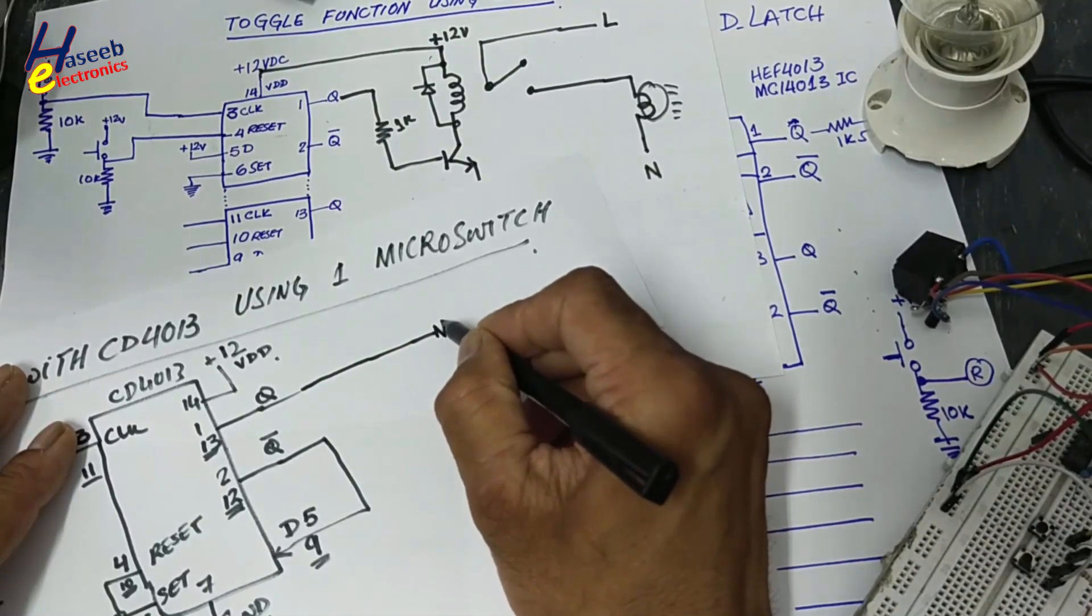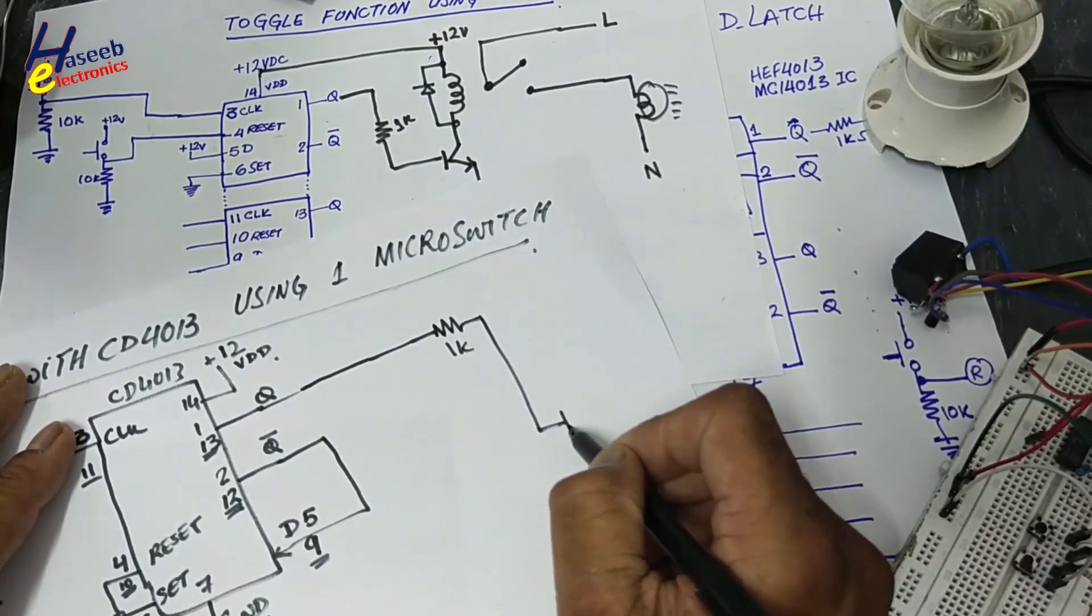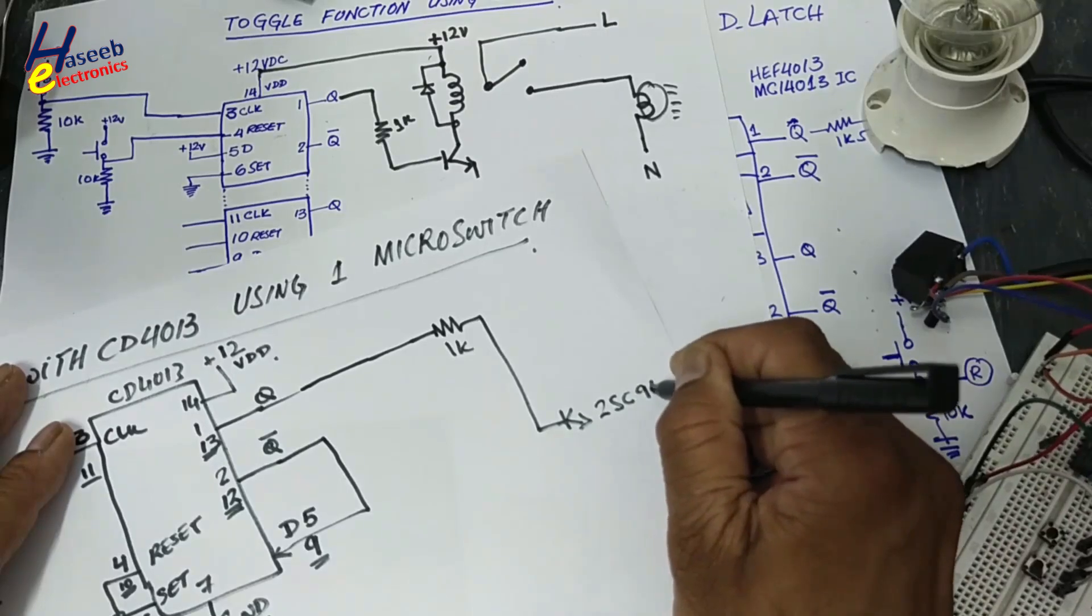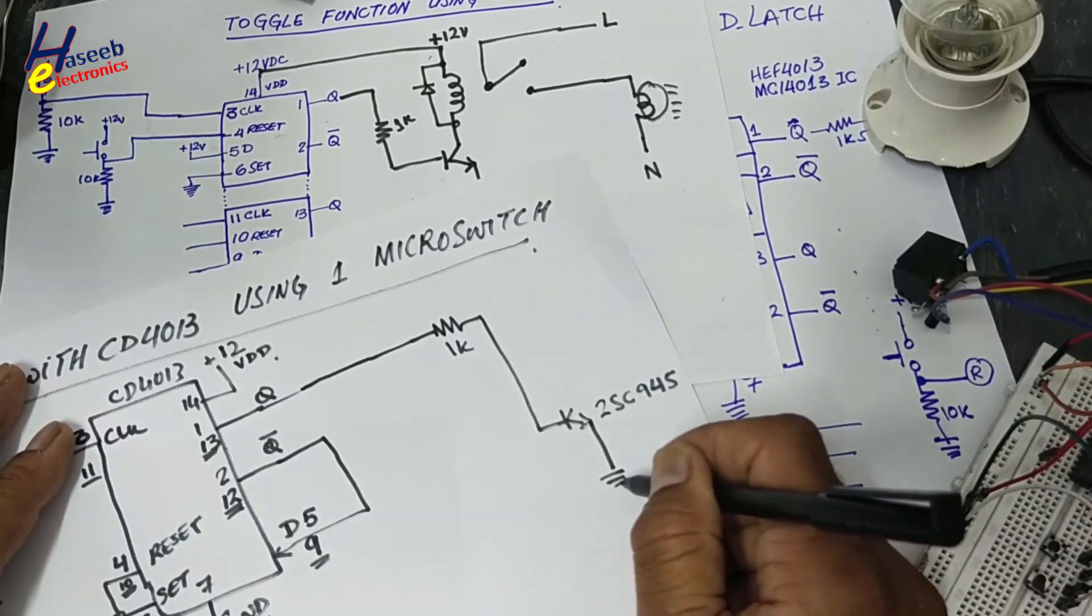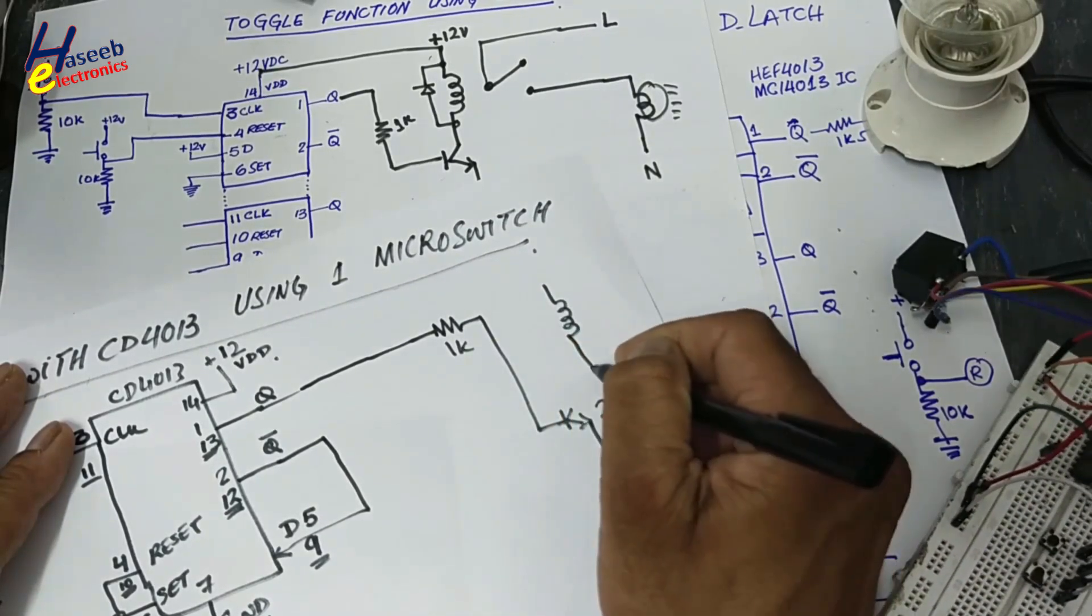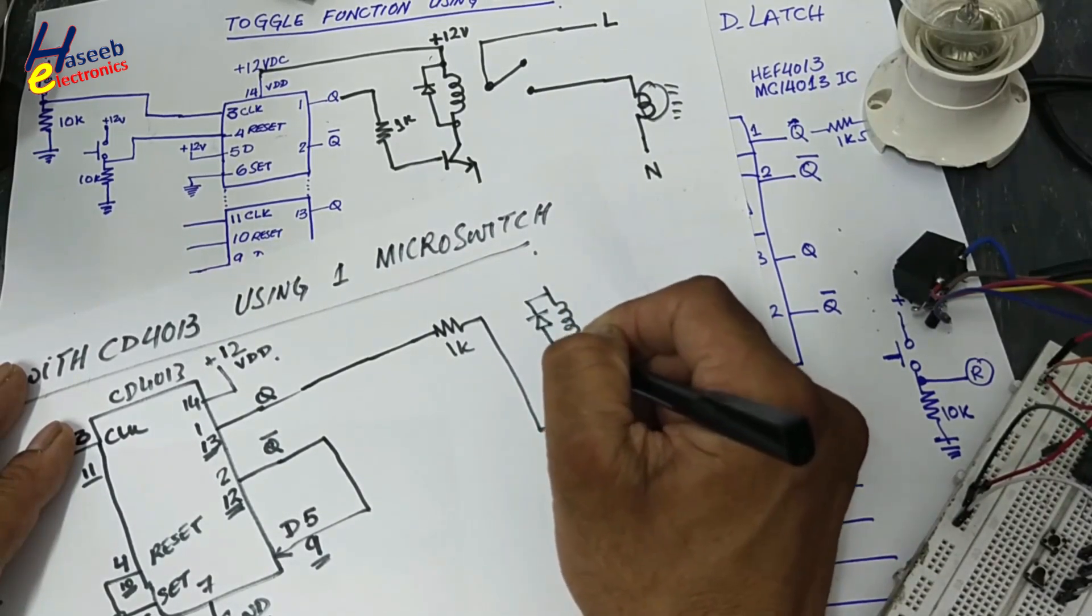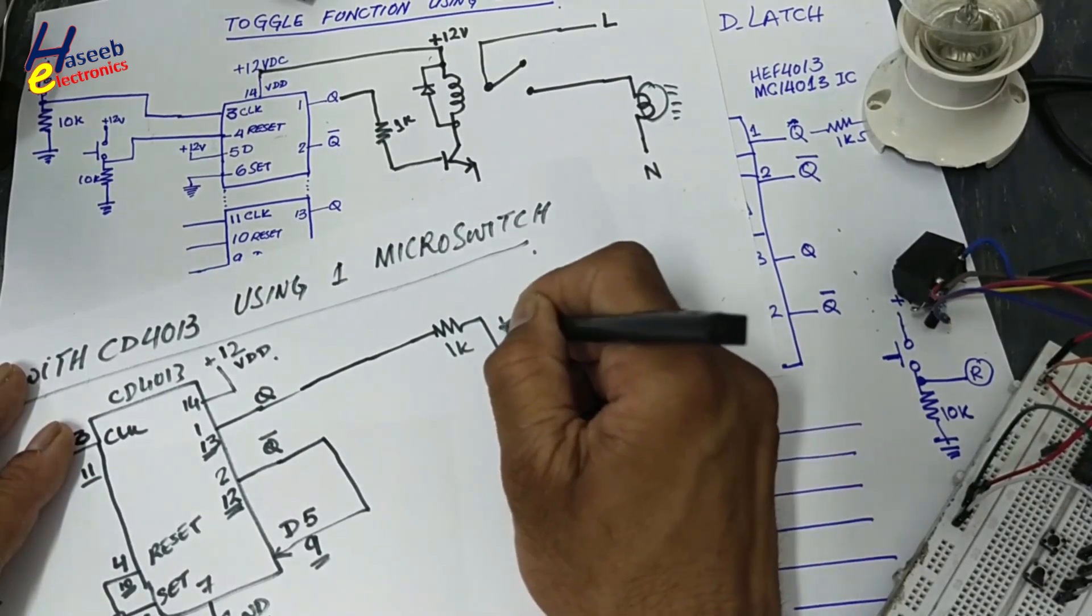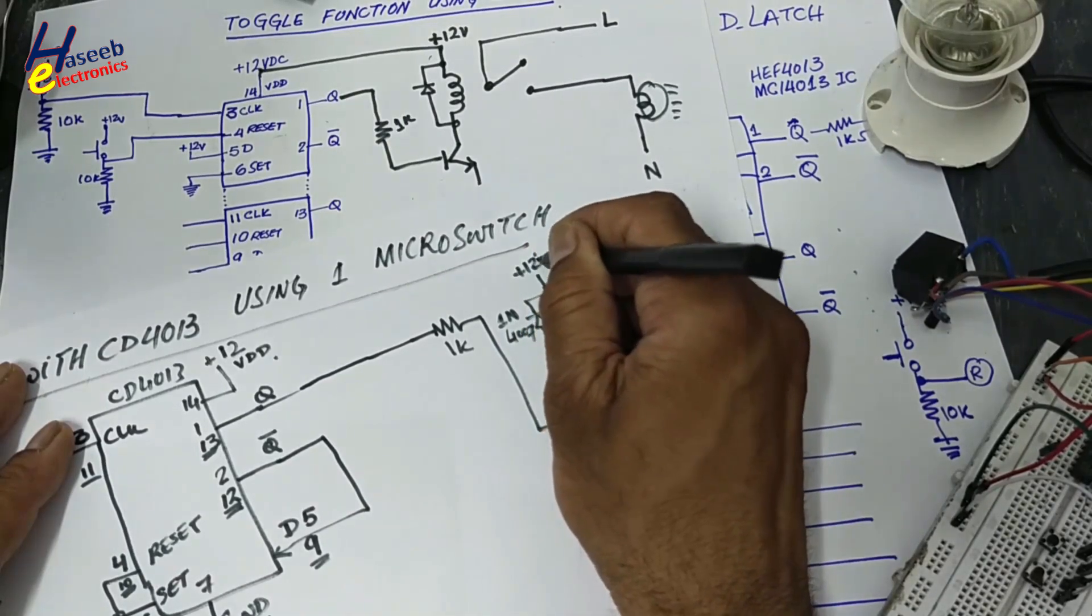For output, we will use 1K resistor. We will connect to a transistor base, 2SC945. Emitter grounded. We will connect our relay, 12 volt relay. One freewheeling diode, 1N4007. Positive 12 volt in the output.